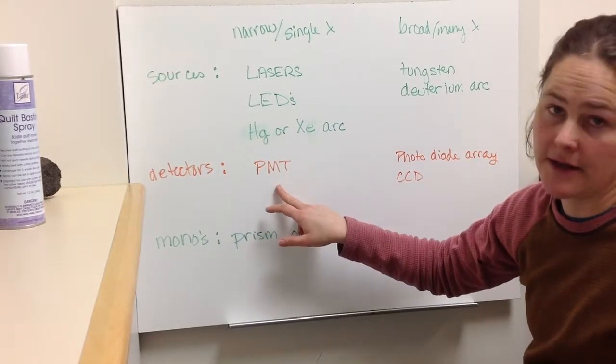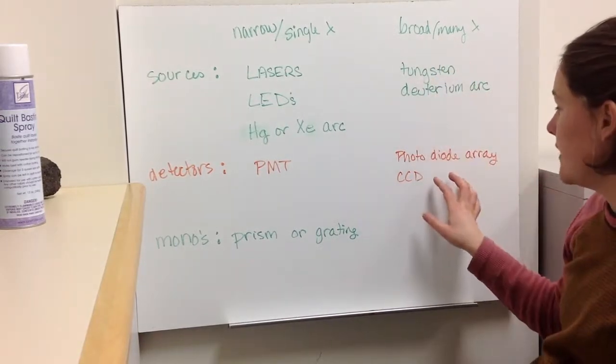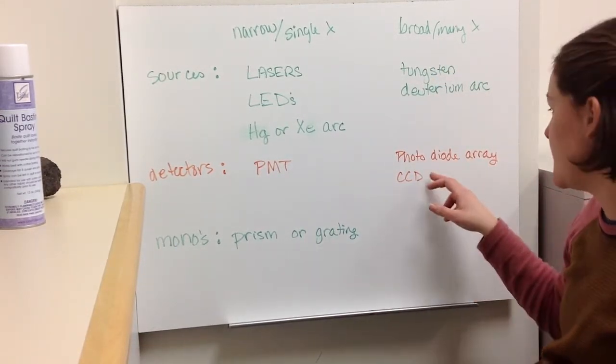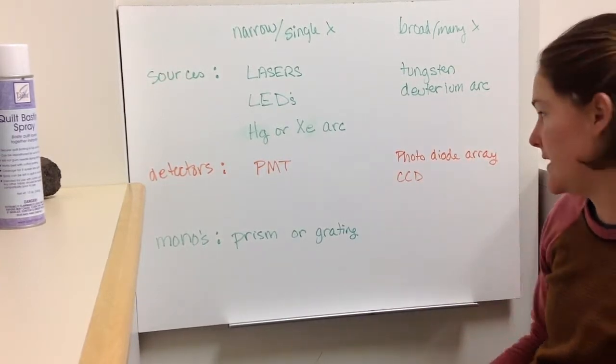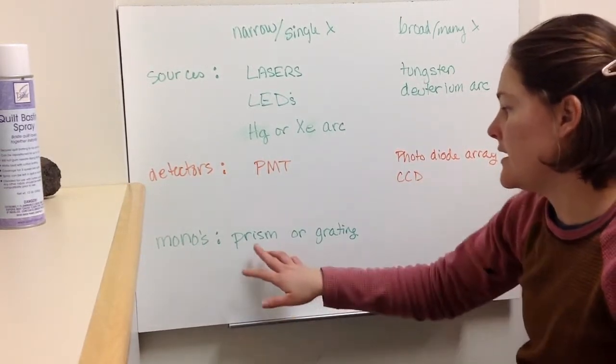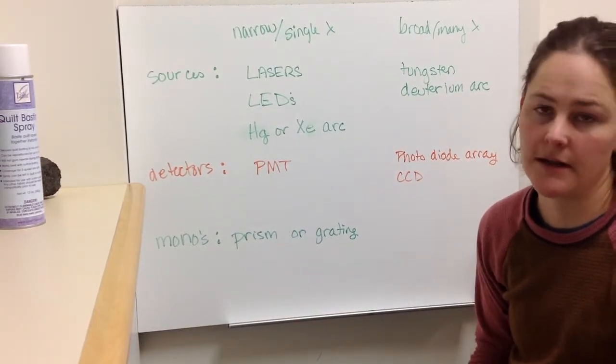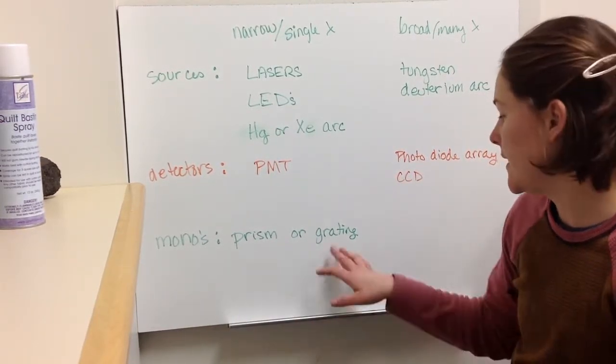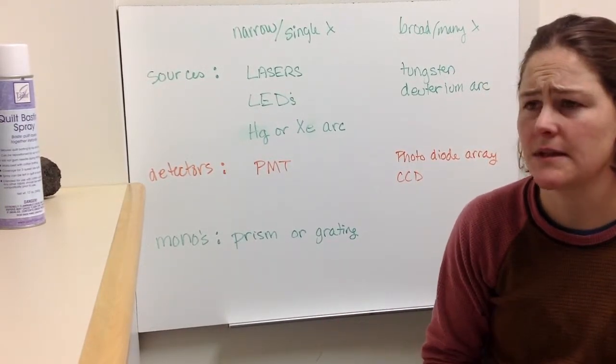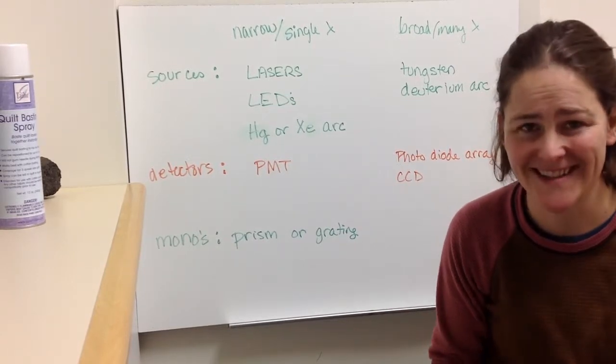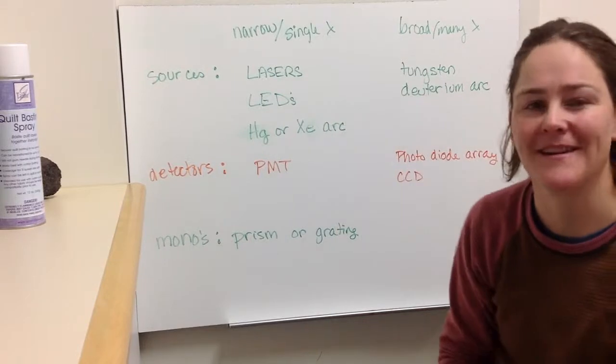And then same thing for the detectors. If you only want to detect one wavelength, you can use a photomultiplier tube. And then if you're interested in detecting all of the different wavelengths all at the same time, you might use a photodiode array or a CCD, a charge coupled device. And for either one, you're going to need to use either a monochromator or a prism or something like that in order to disperse the wavelengths. Although I actually have seen some stuff where people actually use their iPhones as a spectrometer. So I'm not exactly sure how that works, but that would be an interesting thing.